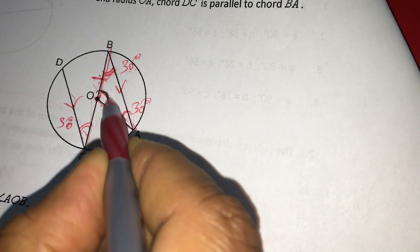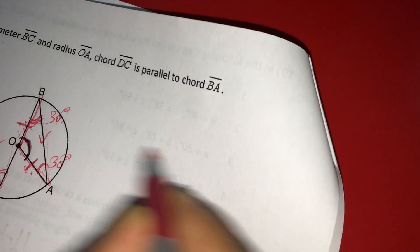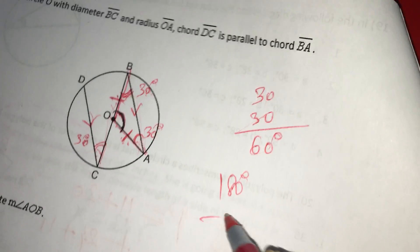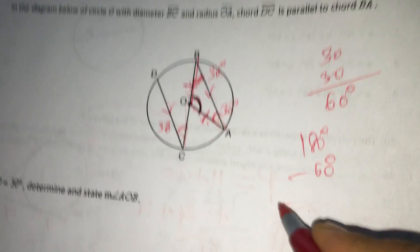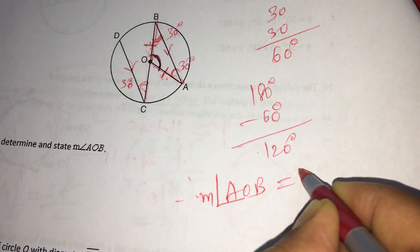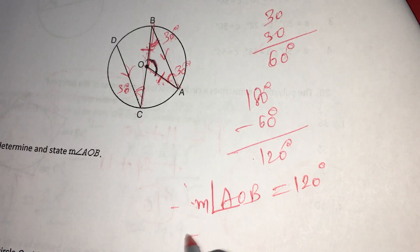But if you want to know this angle, this 30 and 30 you have to add up and then you will get 60 and subtract from 180 this 60 degrees. Then you get 120 degrees. Therefore, measure of angle AOB is 120 degrees.